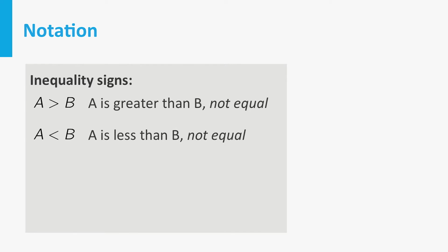If you reverse the inequality sign, it simply means that A is less than B and not equal to B. These inequalities are also called strict inequalities. If A and B are allowed to be equal, we denote this as follows. The first notation means A is greater than or equal to B. The second means that A is less than or equal to B.